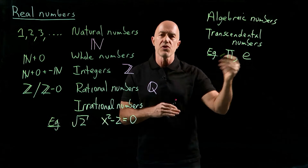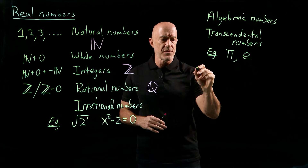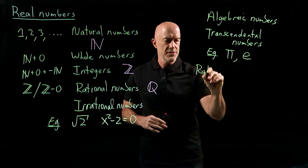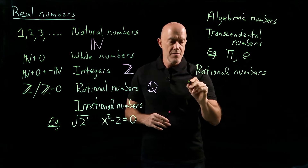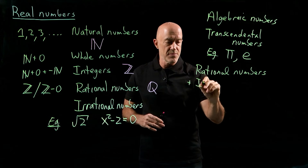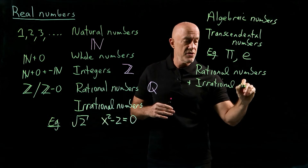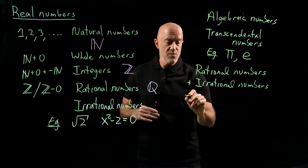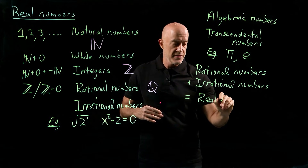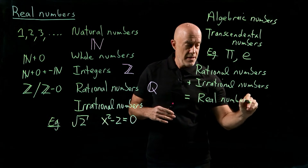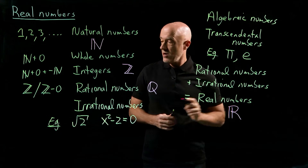So if we combine both the rational numbers — which are the ratio of integers — plus the irrational numbers — which are the numbers that are not rational — then we get the full set of numbers, which is what we call the real numbers. And the real numbers have the symbol blackboard R.